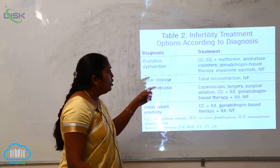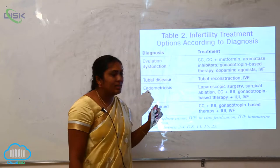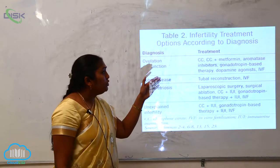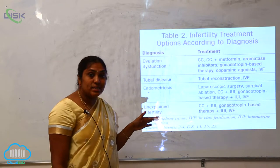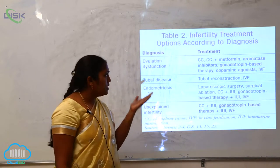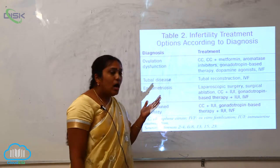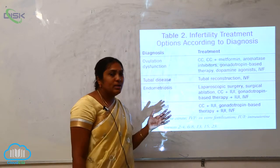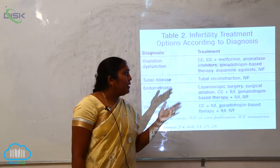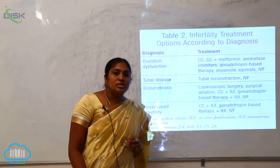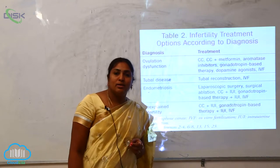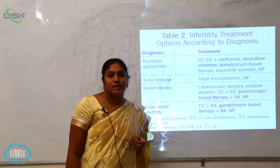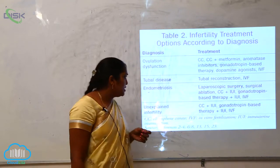The treatments for ovulation-related infertility include aromatase inhibitors and gonadotropin-based therapies. These are all hormonal-based treatments and therapies. Dopamine agonists and IVF treatments are also available for infertility.